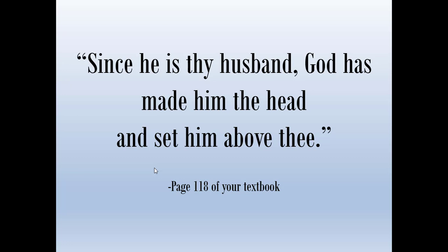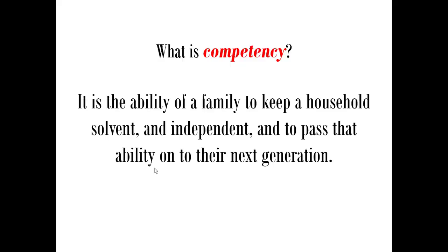The Puritans came to escape the restrictions of Europe regarding their land and religion — also landlessness, because without land you had very little chance of getting ahead. Land ownership was a new thing for them; you didn't own land in Europe. So they wanted to create a self-sufficient farm for their family, and this is called competency — the ability of a family to keep a household solvent and independent, and pass that ability on to the next generation. This was the ideal: you create this self-sufficient farm and hopefully keep it prosperous for generations.